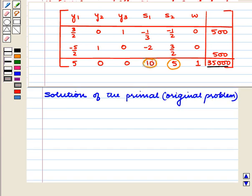So, the solution of primal, that is the original problem which is a standard minimization problem, is x1 is equal to 10, x2 is equal to 5, and minimum z is equal to 35,000.